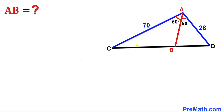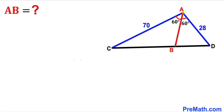Welcome to Pre-Math. In this video we have triangle ADC along with angle bisector AB, such that side length AC is 70 units, side length AD is 28, angle BAC is 60 degrees, and angle BAD is 60 degrees as well. Our task is to find the length AB.